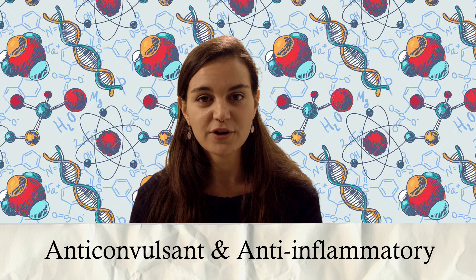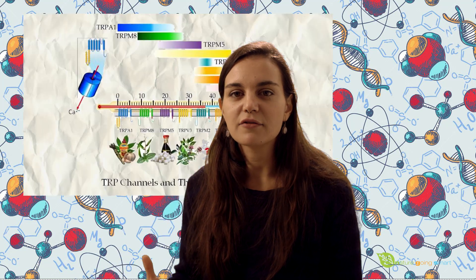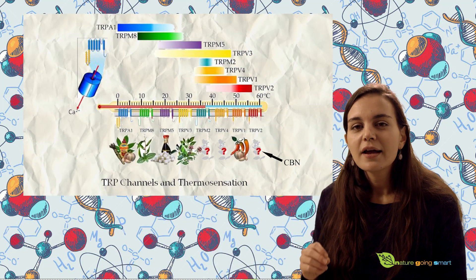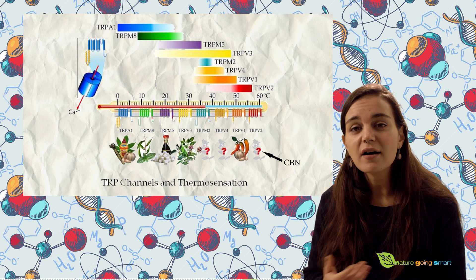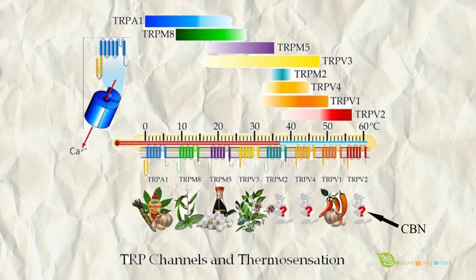CBN is an efficient antispasmodic and anti-inflammatory agent. It binds with more affinity to CB2 receptors over CB1. CB2 receptors are the cannabinoid receptors mostly present in the immune system. Since CBN also activates receptors sensitive to high temperatures, such as TRPV2, it is possible it plays a role in the management of burns, and studies are currently undergoing to explore this therapeutic potential of CBN.